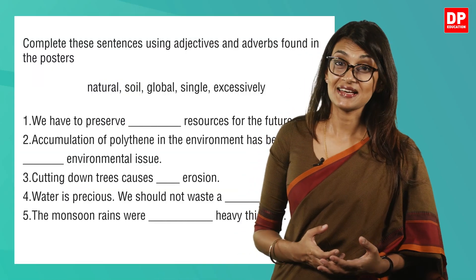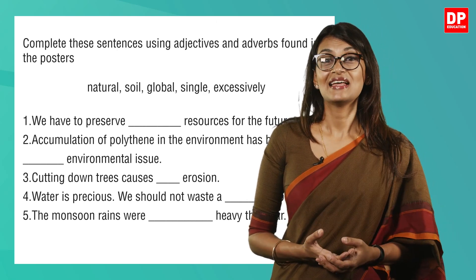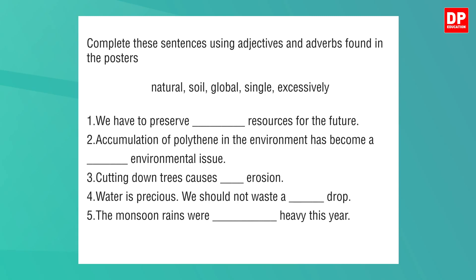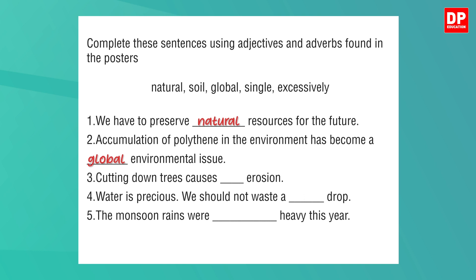Let's now quickly do the fill-in-the-blanks exercise in the following activity, which is based on the posters we just looked at. Complete these sentences using adjectives and adverbs found in the posters. The words given are: natural, soil, global, single, excessively. We have to preserve natural resources for the future. Accumulation of polythene in the environment has become a global environmental issue. Cutting down trees causes soil erosion. Water is precious — we should not waste a single drop. The monsoon rains were excessively heavy this year.